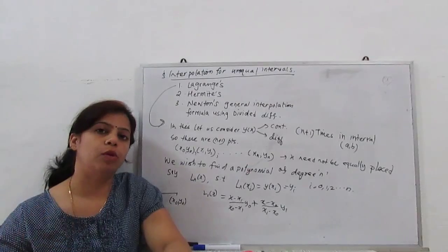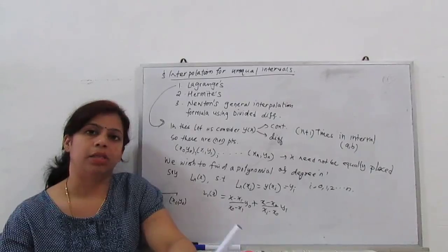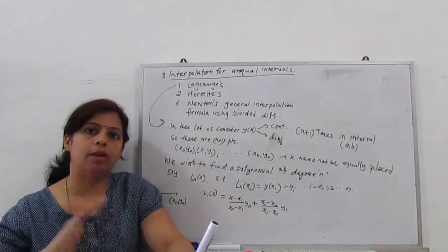Before this, whatever the Newton-Gregory forward and backward, Bessel, Stirling, all are for equal interval H.